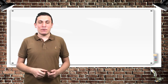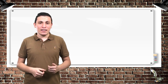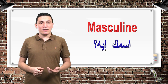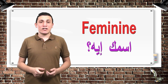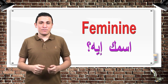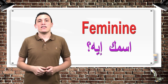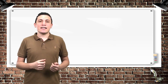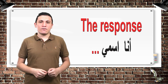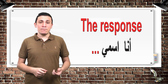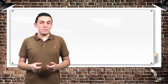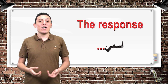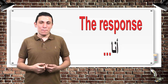So let's review them all again. Ismak Eh — what's your name? To a male. Ismik Eh — what's your name? To a female. The response or the answer is Ana Ismi — my name is — followed by your name. Or Ismi followed by your name. Or Ana — I am — followed by your name.